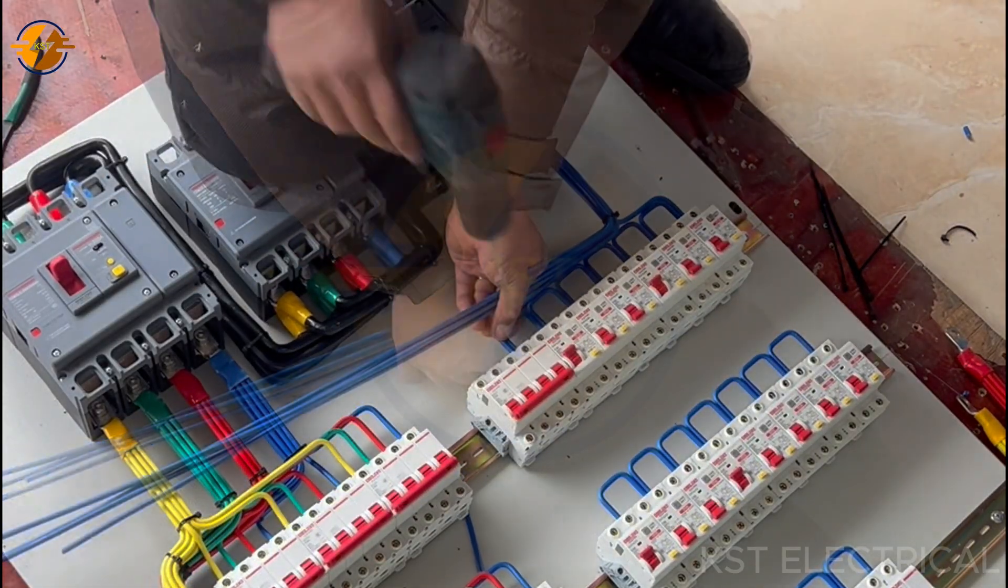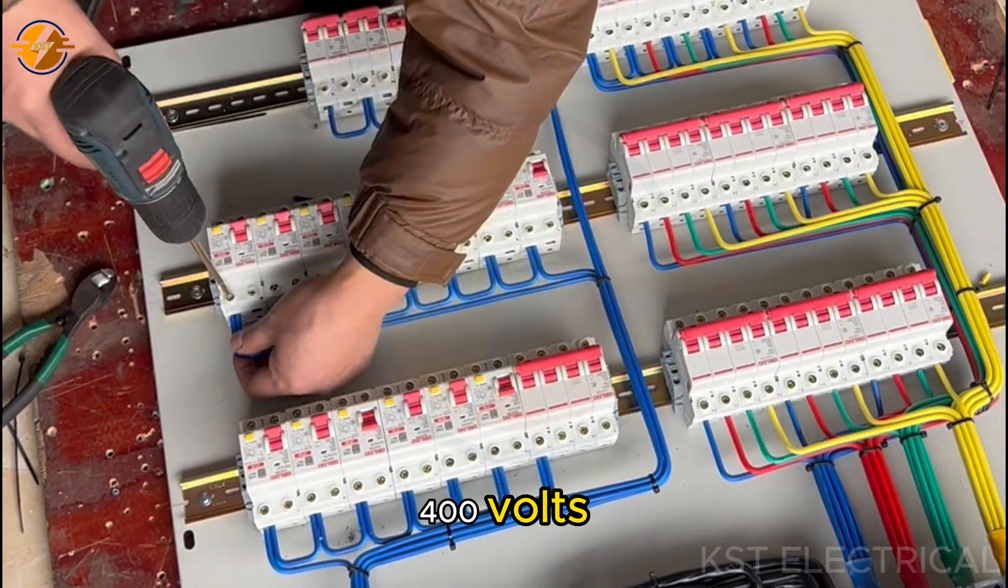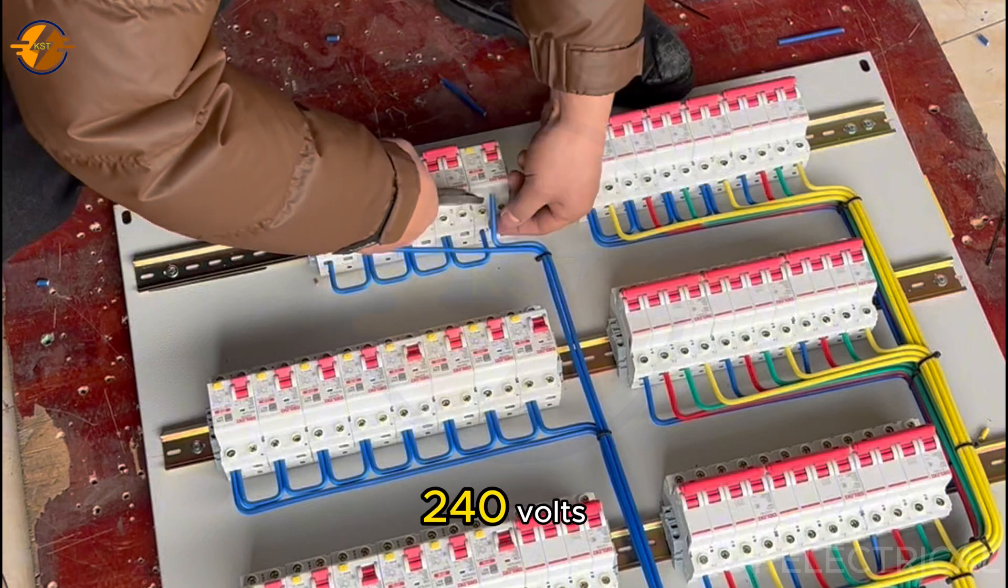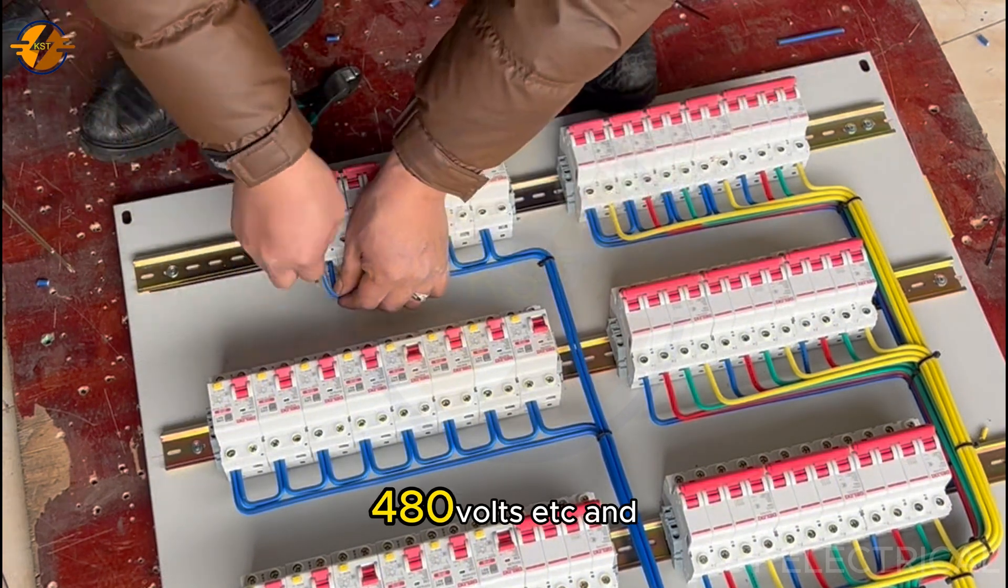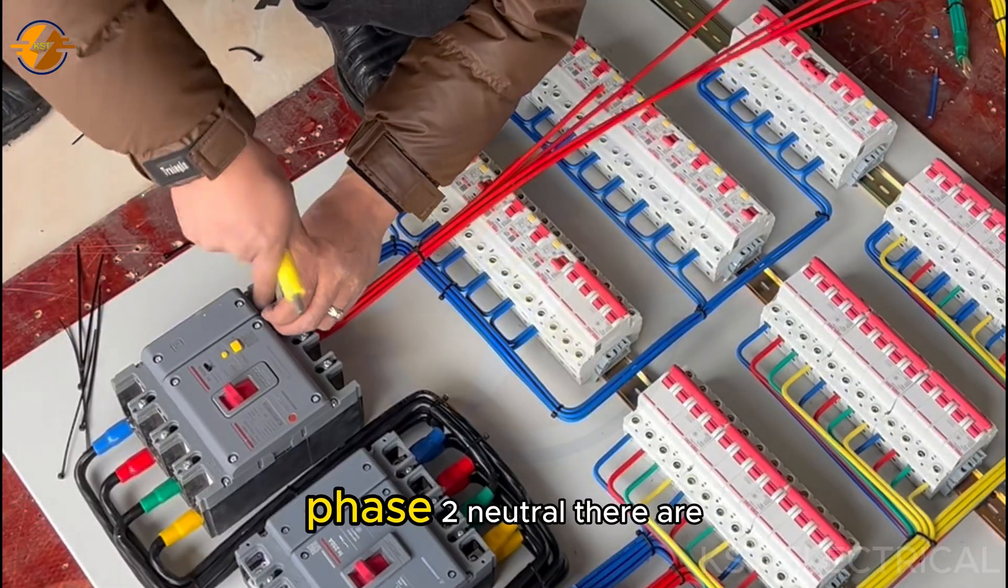In the star connection, three-phase line-to-line or phase-to-phase voltages are 400 volts AC. In the US, 208 volts, 240 volts, 480 volts, etc., and single-phase line-to-neutral or phase-to-neutral.